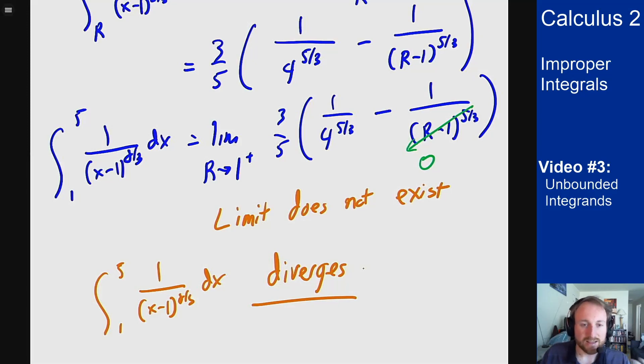And so that's the idea of handling these improper integrals with unbounded integrands. The idea is you figure out where the asymptote is and then get rid of that point from your integral by replacing it by an r, do the integral normally, and then limit r to that endpoint and see what happens.